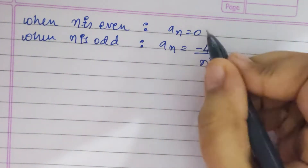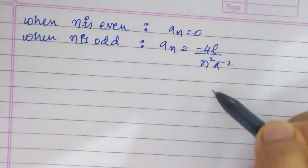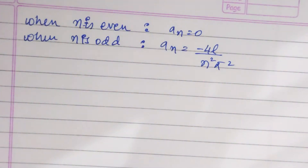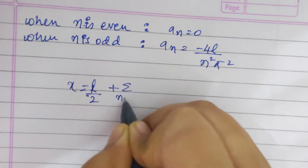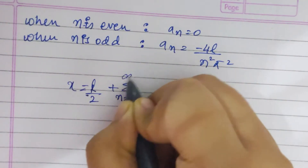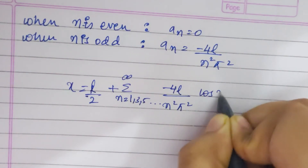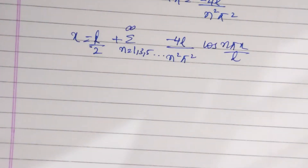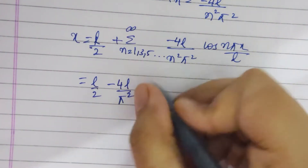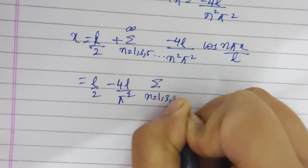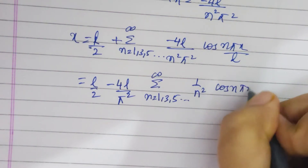When n is even, a_n comes out to be 0. When n is odd, a_n equals minus 4l divided by n squared pi squared. Therefore x equals l by 2 plus summation over n equals 1, 3, 5, etc. up to infinity of minus 4l divided by n squared pi squared times cos(n pi x by l). This simplifies to l by 2 minus 4l by pi squared times summation over n equals 1, 3, 5 up to infinity of 1 by n squared times cos(n pi x by l).